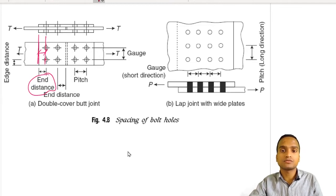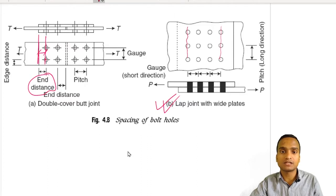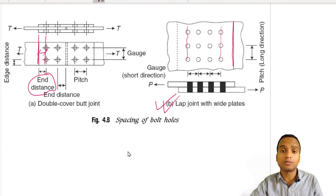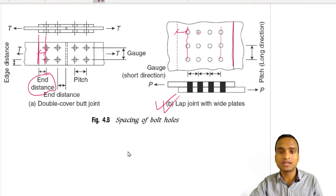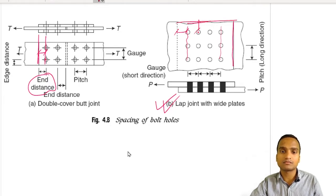For example, in a lap joint with wide plates, the last row of bolting and the end of the top plate — the dotted line being the end of the bottom plate — define the end distance: the distance between the center of the last row of bolting and the end of the plate. Edge distance is the distance between the center of a bolt and the edge of the plate.